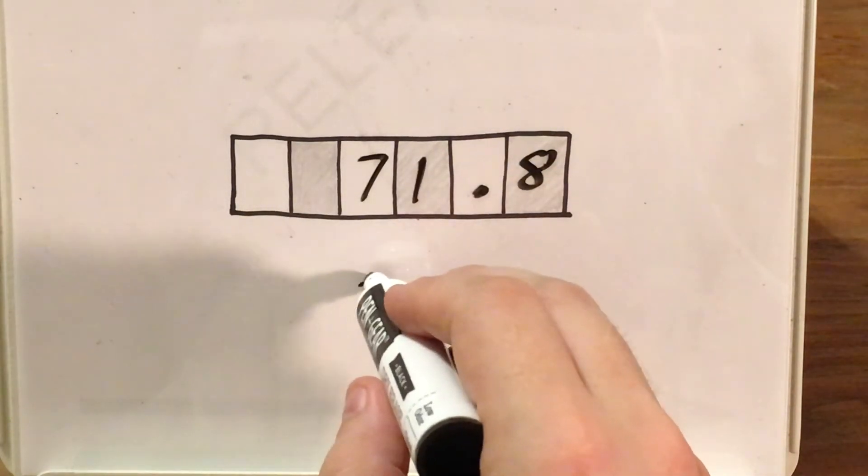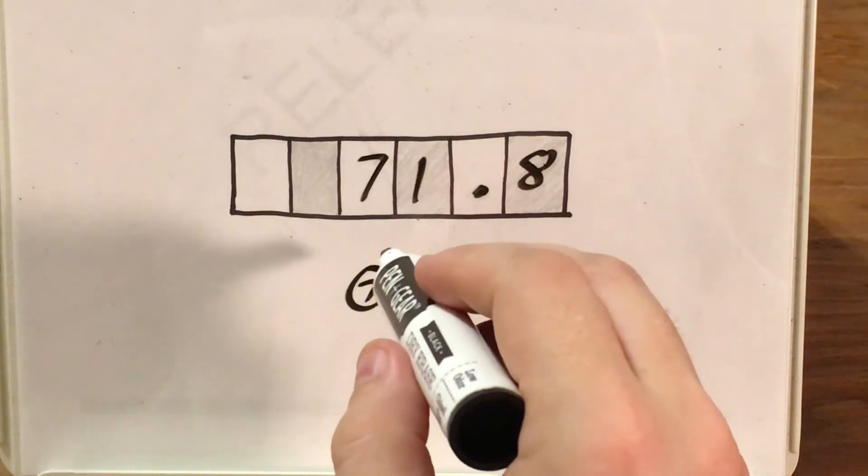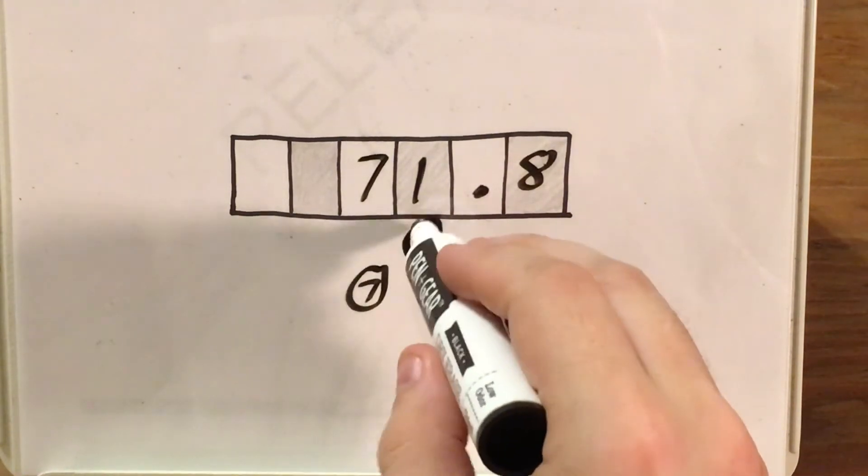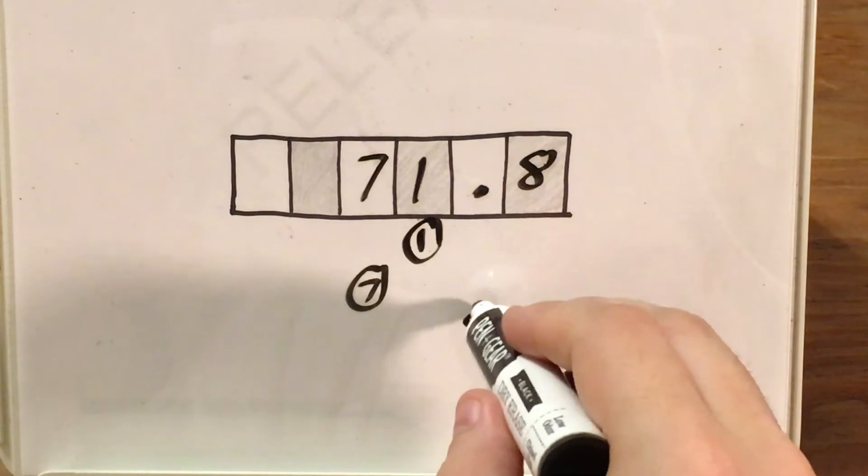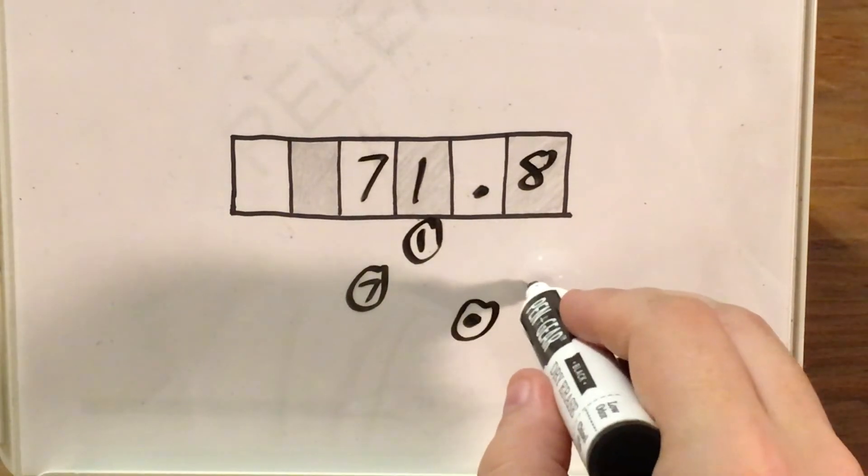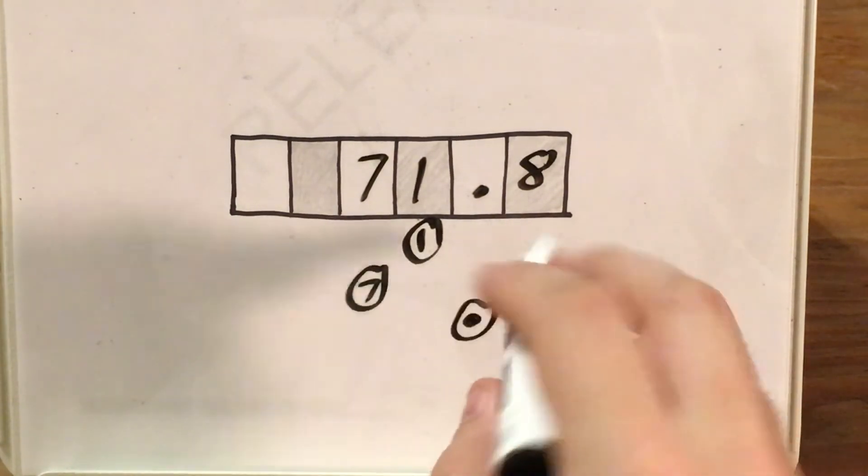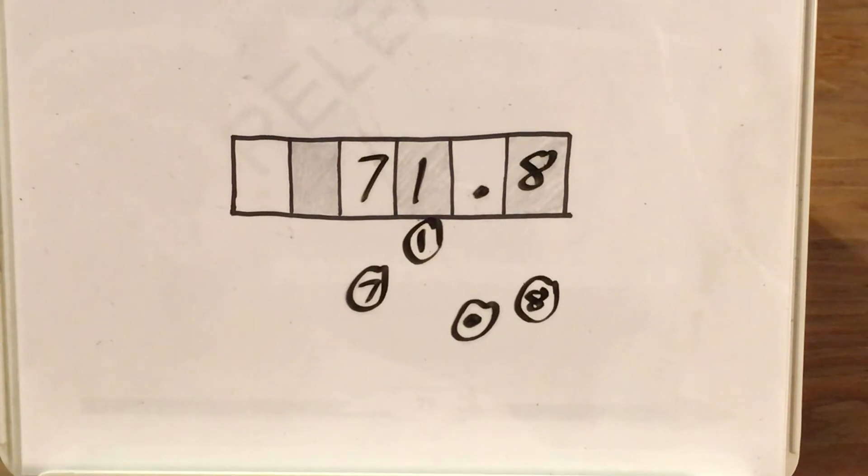And I find the 7 bubble underneath where I wrote 7 and bubbled that in. I find the 1 bubble underneath 1, the decimal point bubble underneath the decimal point, and the 8 bubble underneath 8. All those get bubbled in. And that's it. That's how I solve and write the answer for a question like this.